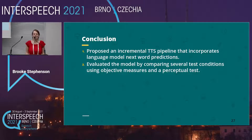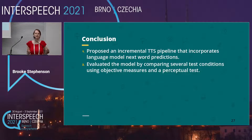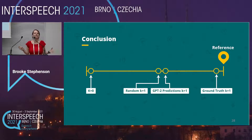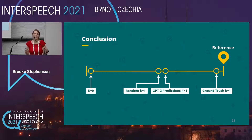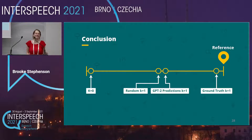As a conclusion, we proposed an incremental TTS pipeline that incorporates language model next word predictions. We evaluated the model comparing several test conditions using objective and subjective measures, and found that our proposed method offered significant improvement over the k equals zero condition, but only a slight improvement over the random condition. We attribute this slight improvement to when the model guesses the exact next word. As language models continue to improve, we expect to see greater results from this method.